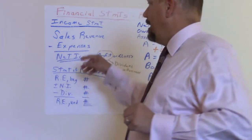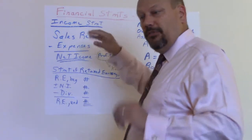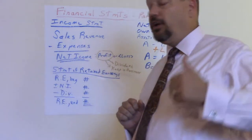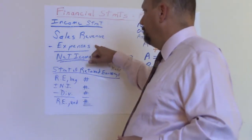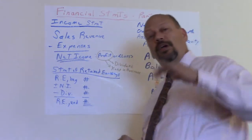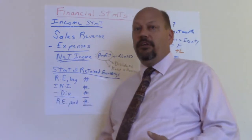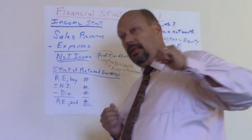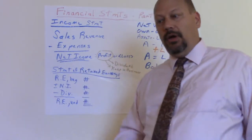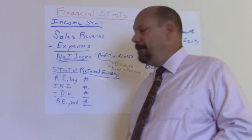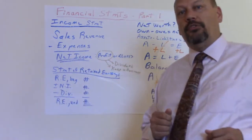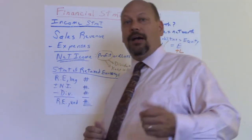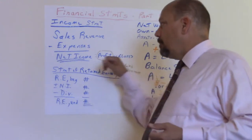Revenue less expenses gives you net income — that's where you get the 'net' idea. You end up with either a profit, which is a good thing, or a loss, a bad thing, if you had more costs than revenue. If you have a profit, you'll do one of two things: leave it in the business to help it grow — retaining the earnings — or distribute it to the owners. We call that a dividend, whether you're giving it back to partners, owners, or stockholders.